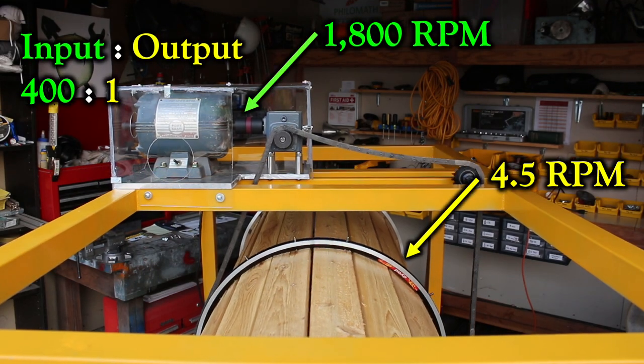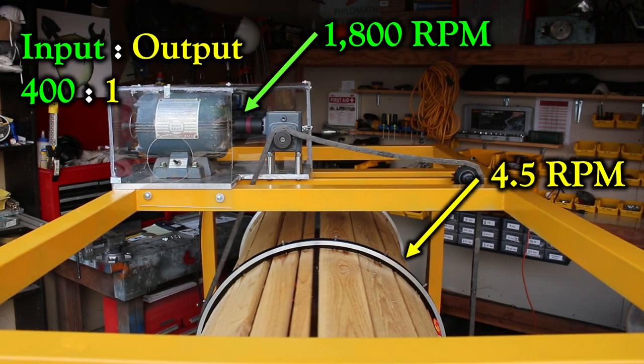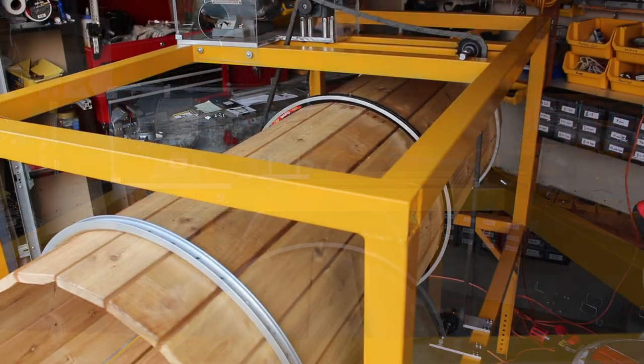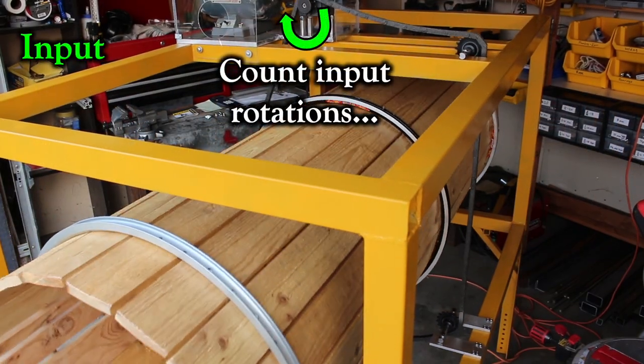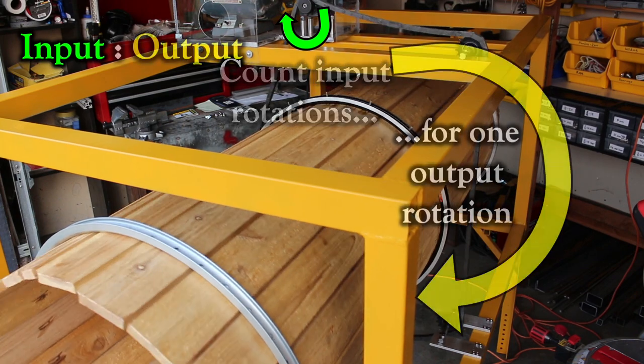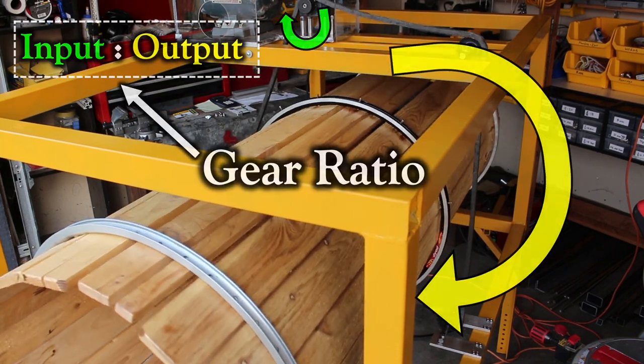Now if you're ever in a situation where you do not know what the gear ratio is, then all you've got to do is count the number of input rotations in order to achieve one output rotation. And that's your gear ratio.